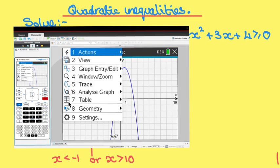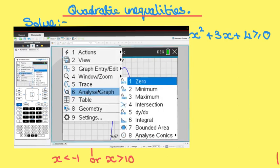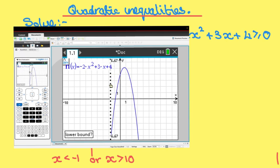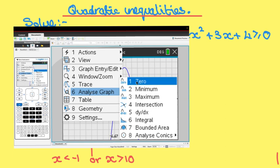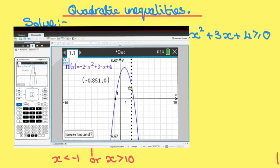So the first thing we need to do is find the two zeros. So go to menu, analyze graph, zero. Slightly to the left, slightly to the right. So our first zero occurs when x is -0.851. Do the second zero.